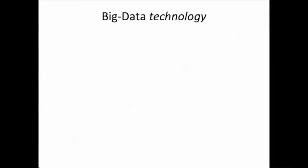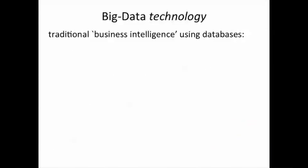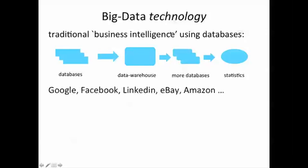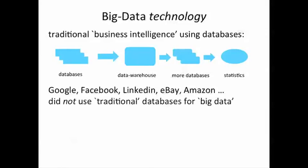As a result, the technology used by large enterprises — which pretty much looks something like this — where you have a bunch of databases where data is collected, cleaned, put into things called data warehouses, and then taken out into further databases on which some statistics or reporting is performed — this approach simply does not work. And Google, Facebook, LinkedIn, eBay, Amazon, which needed to process large volumes of big data on the web, did not use traditional databases. In fact, they could not. Later in this course, we'll study why, as well as what they replaced this technology with.